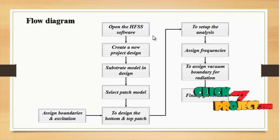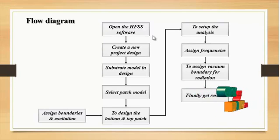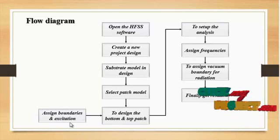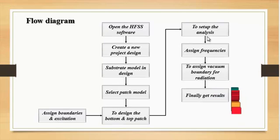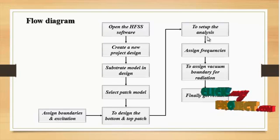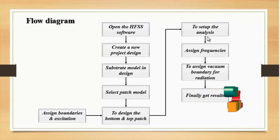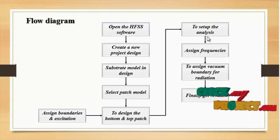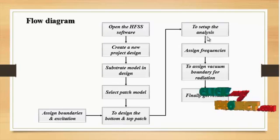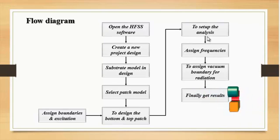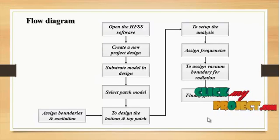Select the substrate to be used, then select the patch model to design the bottom and top of the patch. Assign the boundaries and excitation to set up the frequency analysis — defining the start and stop frequency. Assign the frequency value to be used. Then assign the vacuum boundary for radiation, to define the final radiation pattern.